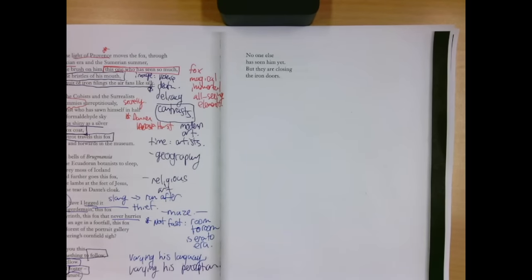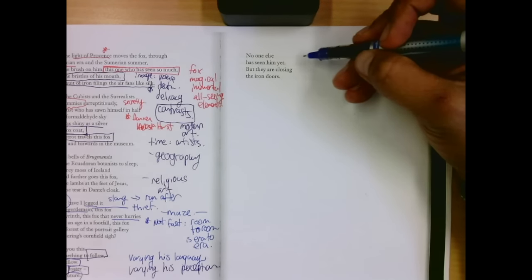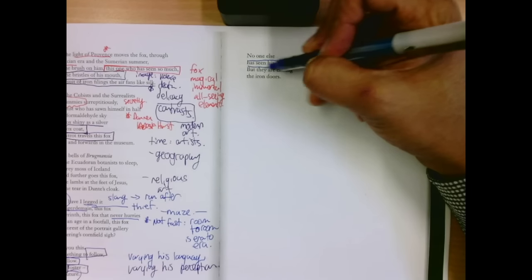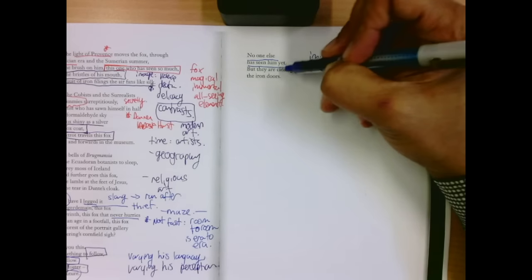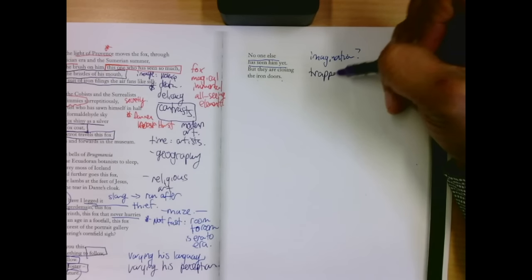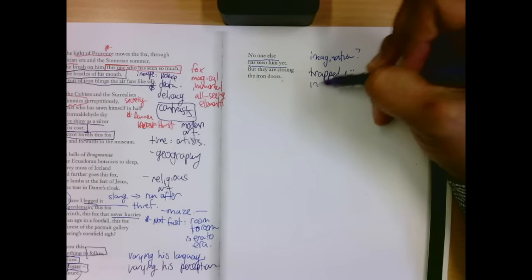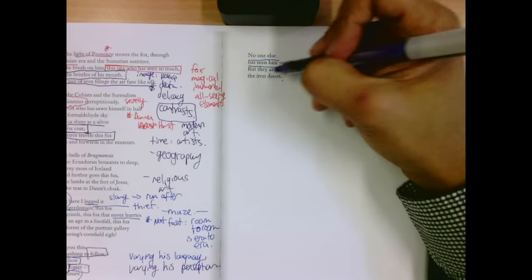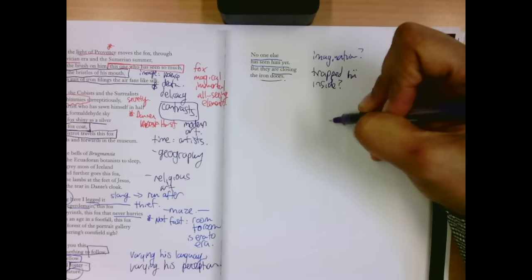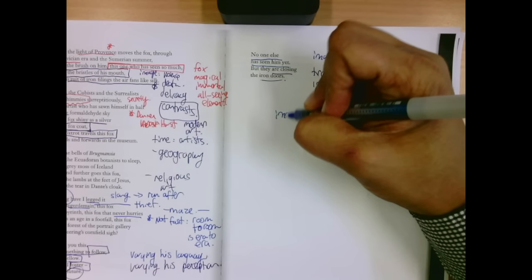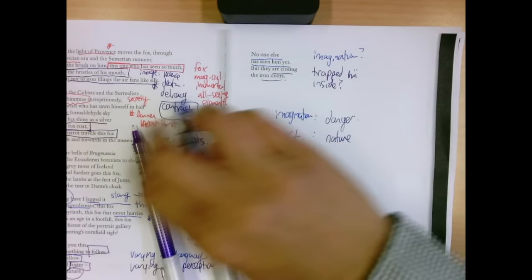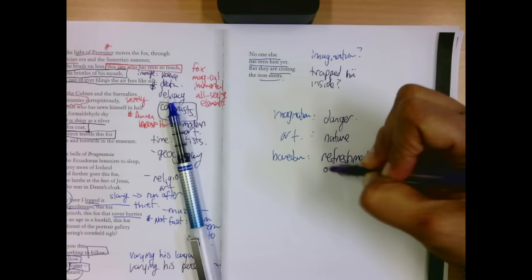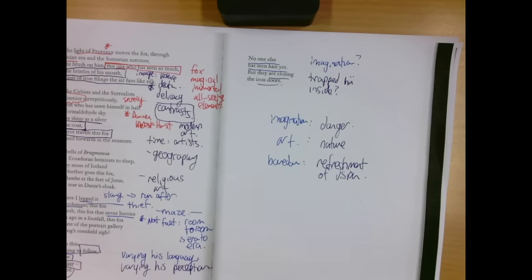No one else has seen him yet. But they're closing the iron doors. This last stanza is different as the final few stanzas, the last two stanzas are getting smaller. But if no one has seen him yet, what does that indicate? Is this just a fox of the imagination? But if they're closing the iron doors, does that mean they've trapped him? Trapped him inside? It's unclear to me in this ending, but I think he wants it to be. There's the tension between the danger and the imagination between art and nature, boredom and refreshment of vision. All these things are at play, I would argue, in this poem.